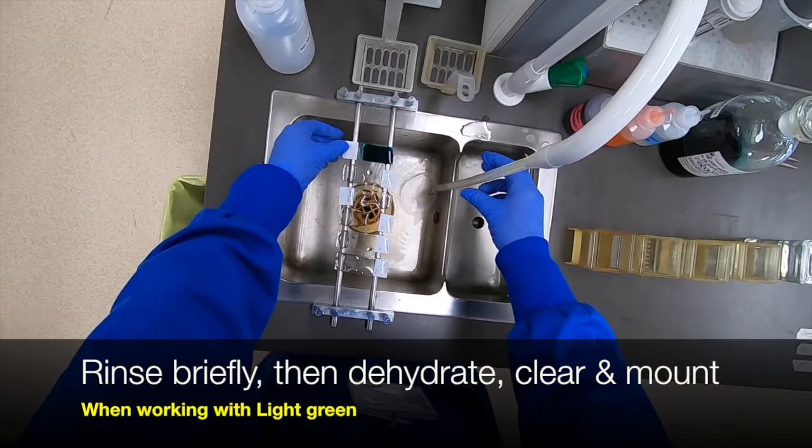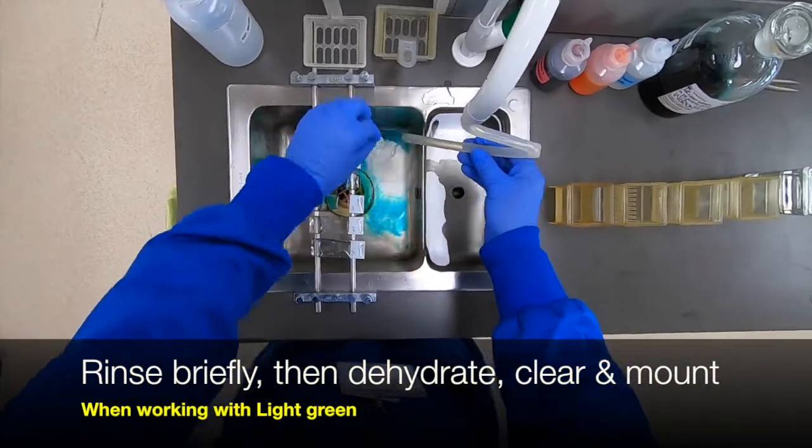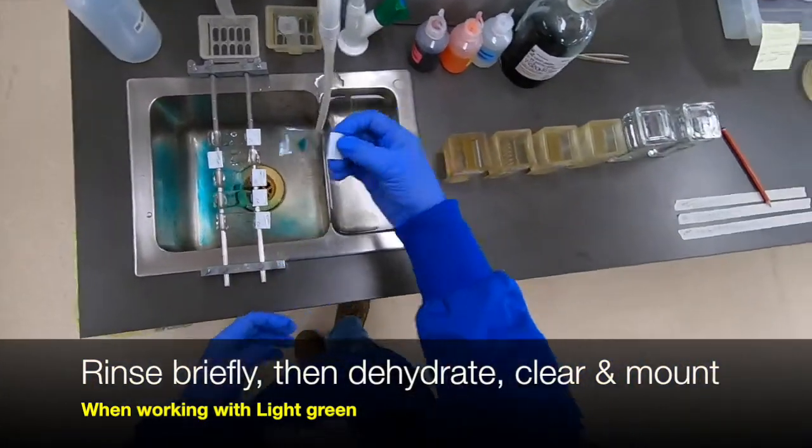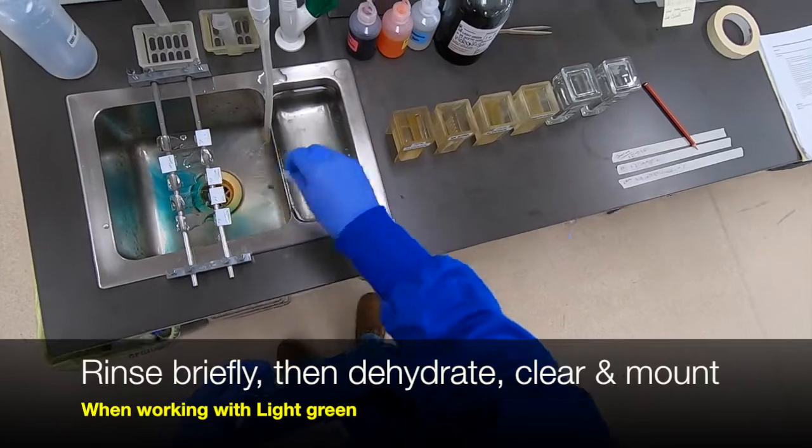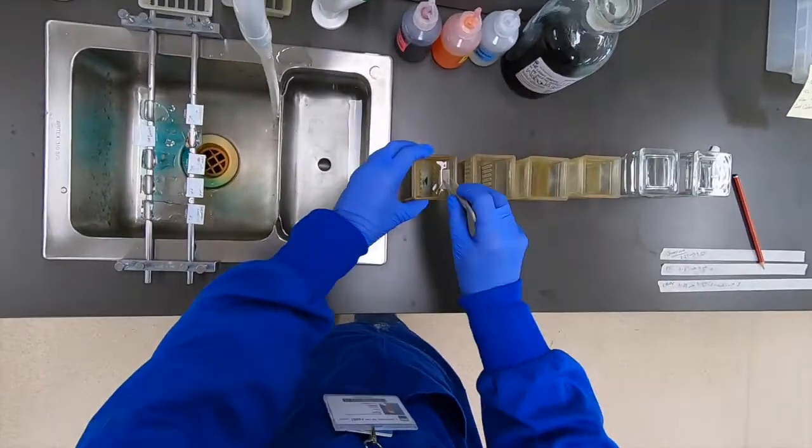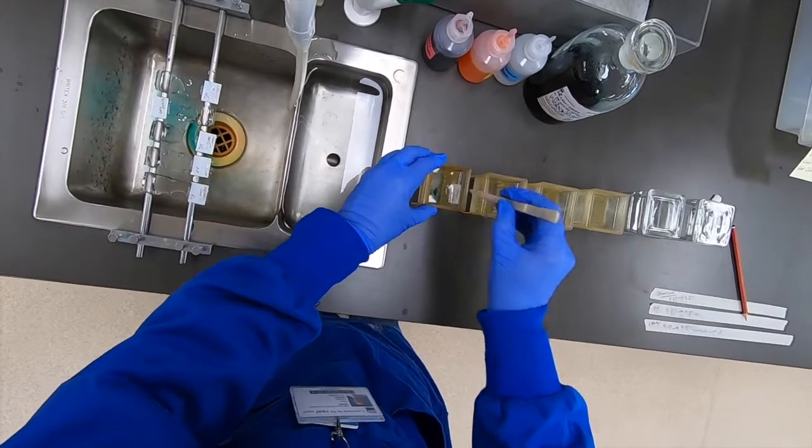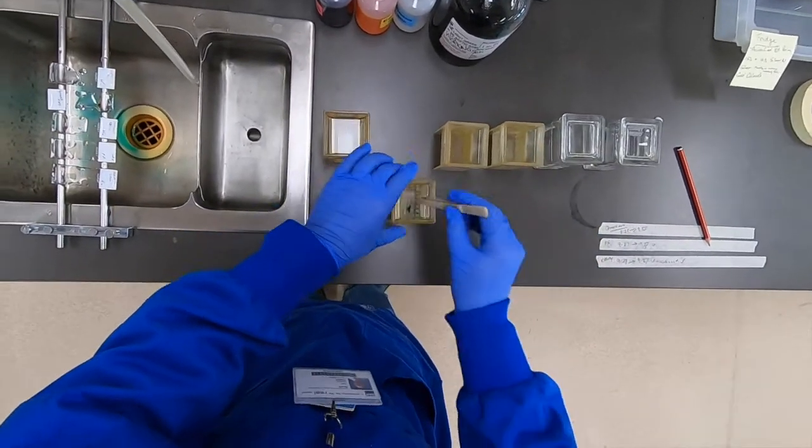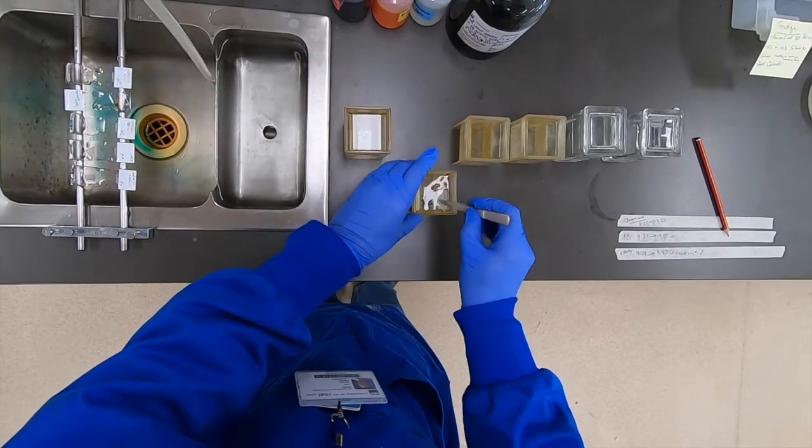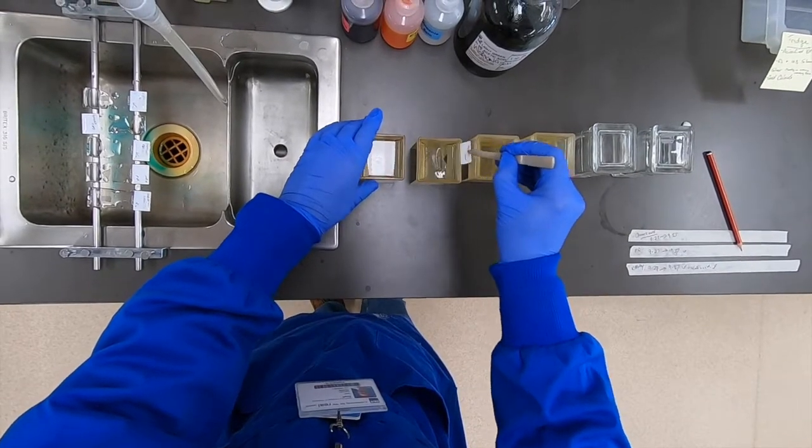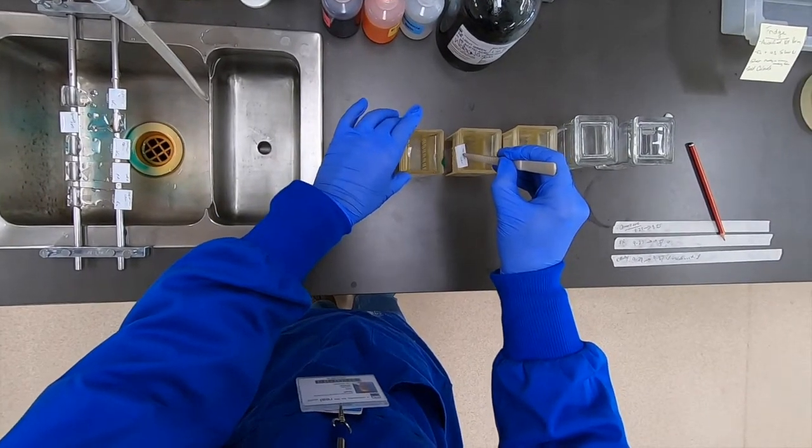So the light green is held relatively lightly within the tissue, just by virtue of its size. It's a relatively large molecular weight dye, so it tends to linger within the various fixed structures. So you have to be careful not to over-rinse. So a brief rinse in water after the 30 seconds of staining, and then promptly move through the alcohols during the dehydration and subsequent clearing, before being cover-slipped.